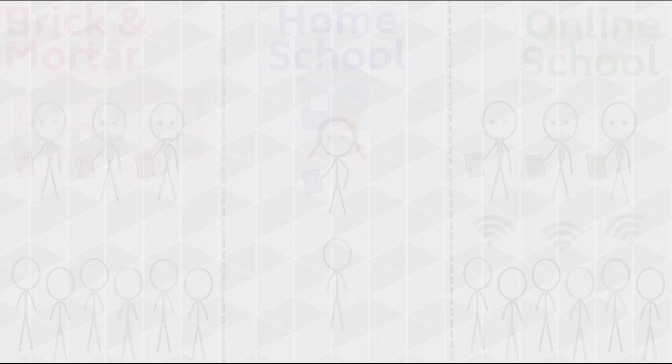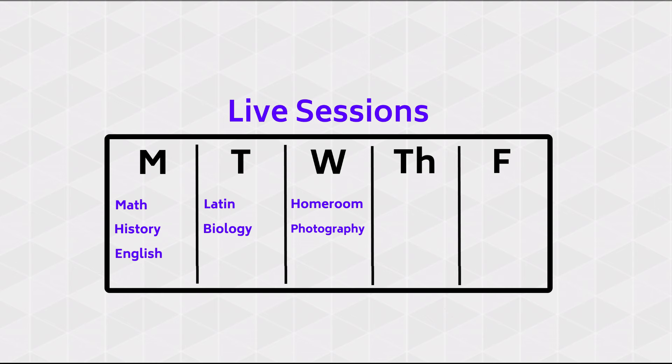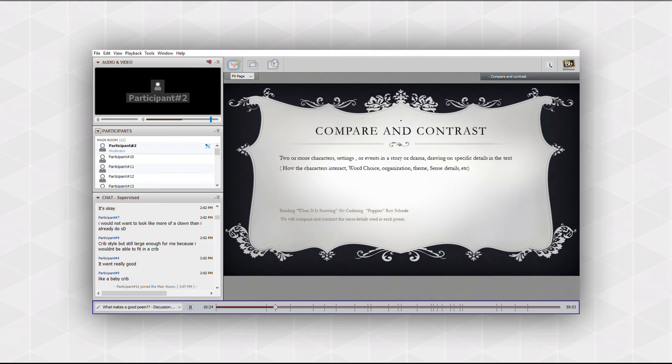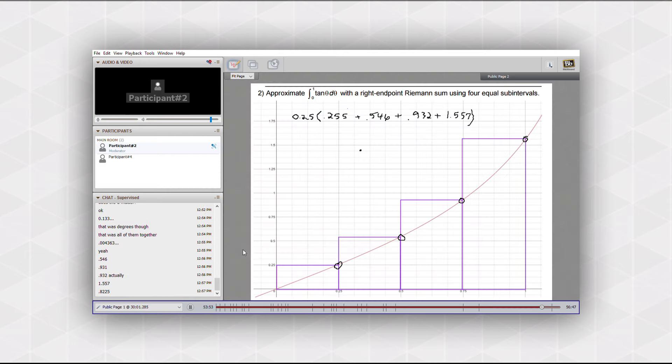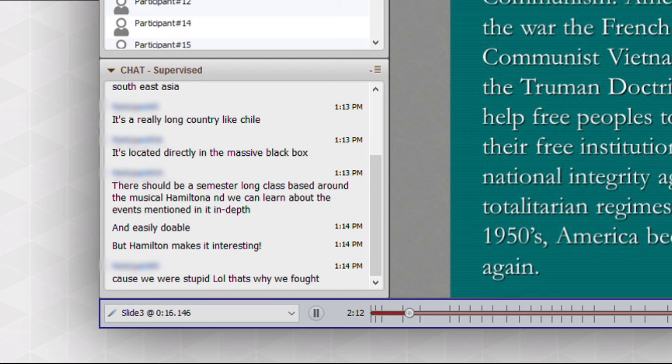Now let's get more into the details of how online school works. There are two parts: live sessions and coursework. For each of my classes, we meet once a week for a live session. The teacher can talk to us through a microphone. We are talking today about comparing and contrast. They can show slides of information, a video, or a virtual whiteboard.